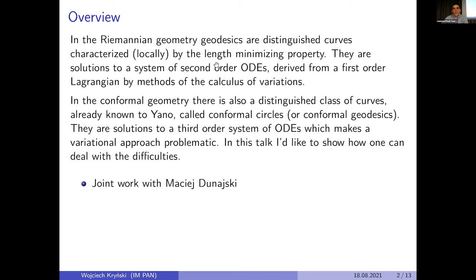These geodesics are not well defined in conformal geometry, where you cannot measure the length of a curve. But there is also a distinguished class of curves in conformal geometry that are called conformal circles, because in the flat case they are just circles. Sometimes they are also called conformal geodesics. If you have a curve that goes around a circle, to define the curve you fix the starting point, velocity, and acceleration — so you need three parameters. These distinguished curves in conformal geometry are solutions to a third-order ODE.